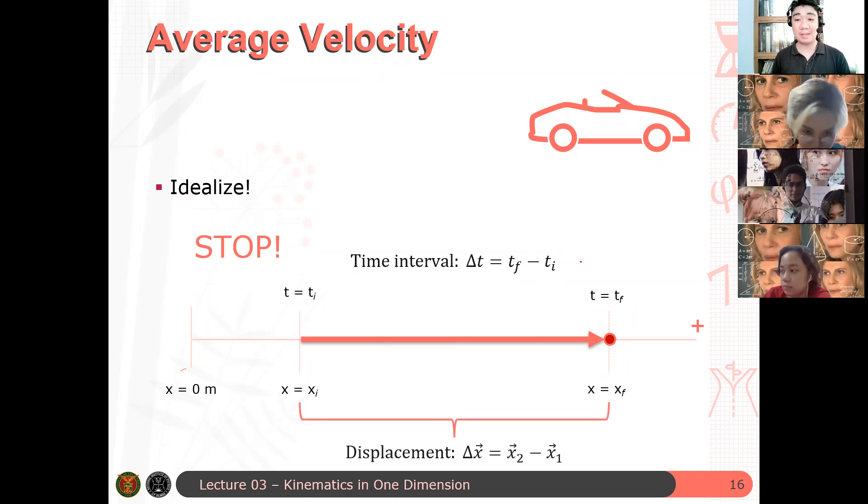So the time interval is delta t equals t_f minus t_i, and the displacement is the vector from the initial position to the final position. That is x2 vector minus x1 vector. Okay? Questions. Now, the question is, what's the rate of change of the displacement per time of this car?